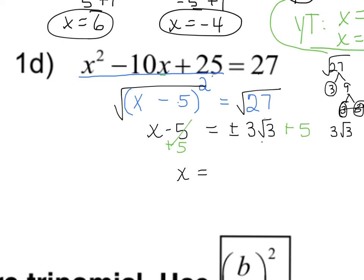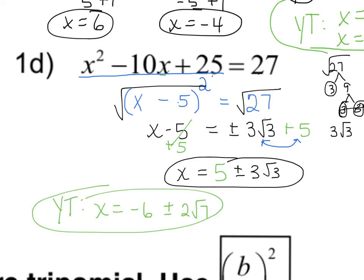And now you might be thinking, how on earth are we going to add 3 square root 3 and 5? Well, we're not. We can only add radicals, things with square roots, that have the same square roots. So we can't add those. What we are going to do is flip-flop the order. We're going to write the positive 5 first, and then we're going to write the plus or minus 3 square root 3 after it. And that's the final answer. Go ahead and give the you-try a shot. And the answer to that you-try is negative 6 plus or minus 2 square root 7.